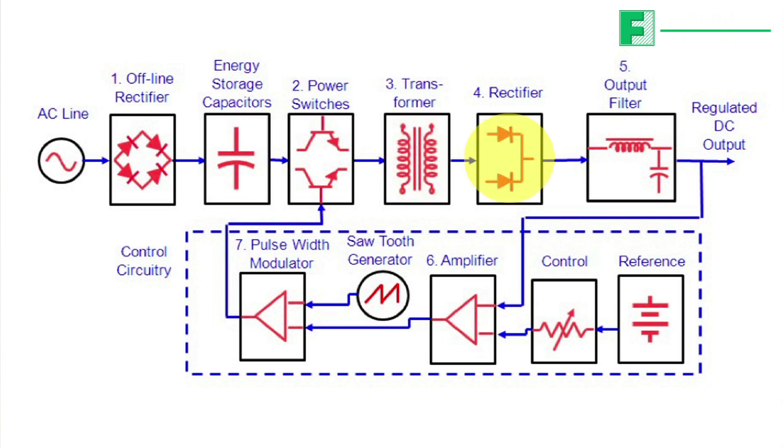This transformer's secondary AC voltage is rectified into a pulse DC voltage. An LC output filter averages the pulse into a continuous DC voltage at the power supply's output. As with a linear power supply, an error amplifier compares the DC output voltage against a reference to regulate the output at the required setting.